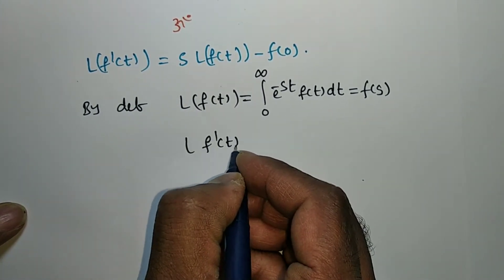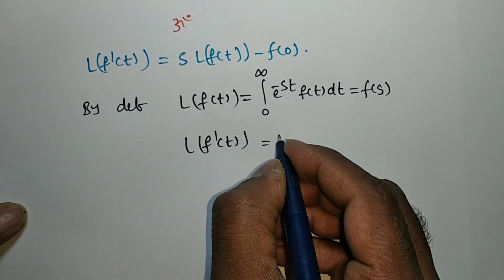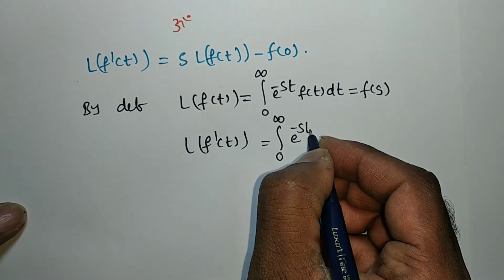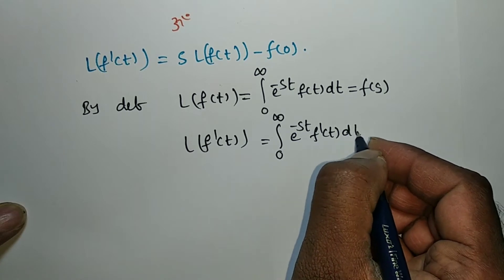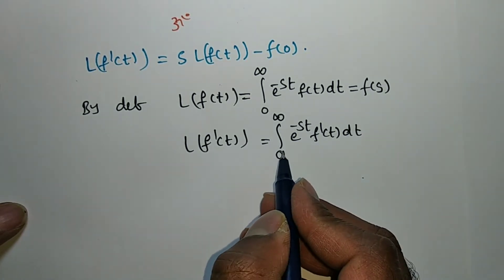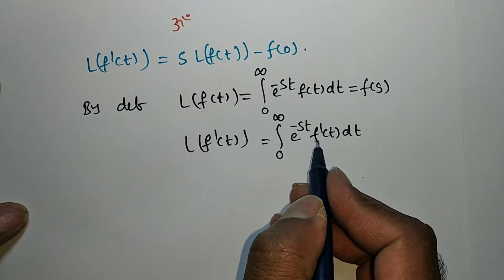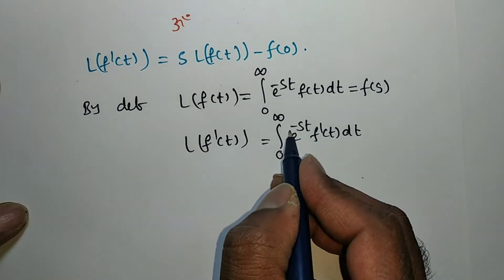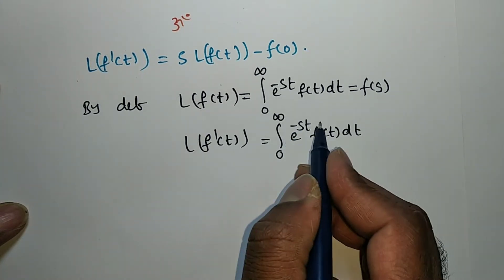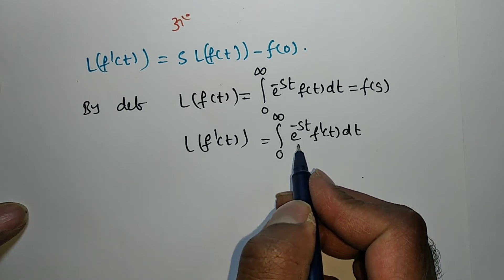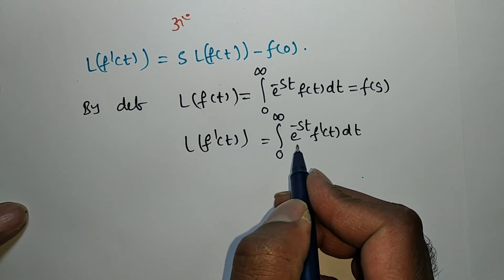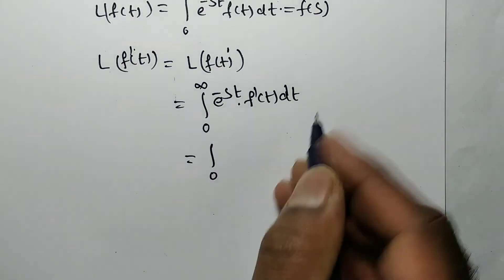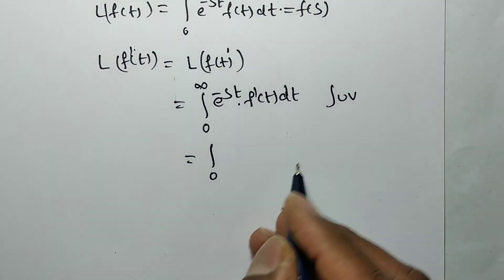So L{f'(t)}, by definition, is equal to integral from 0 to infinity of e^(-st)·f'(t) dt. The integrand is a product of two functions, so we use the integral uv formula.